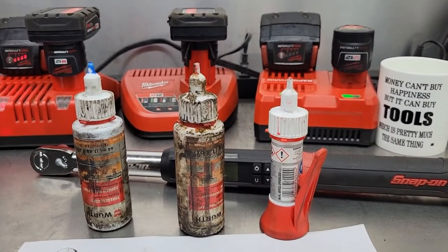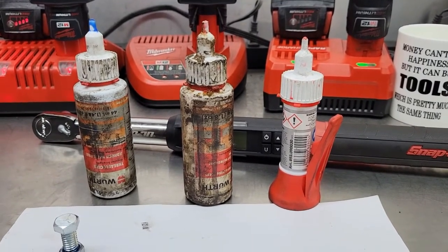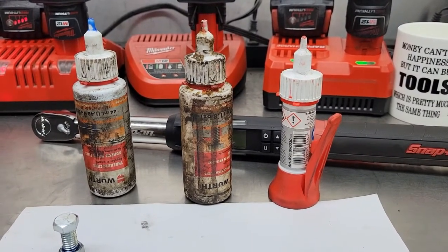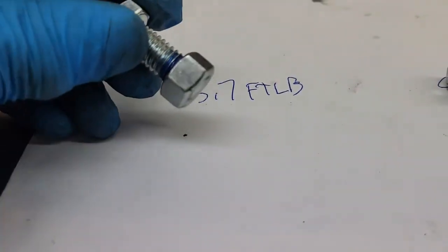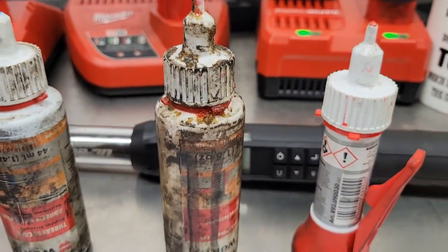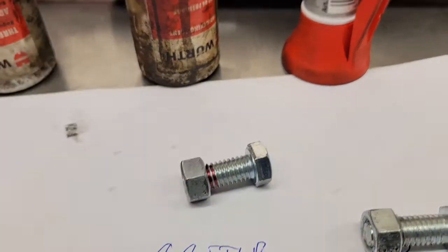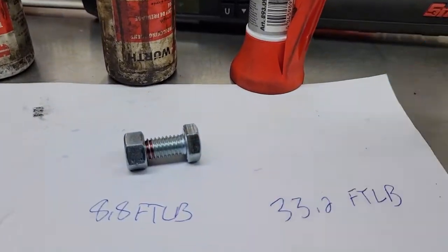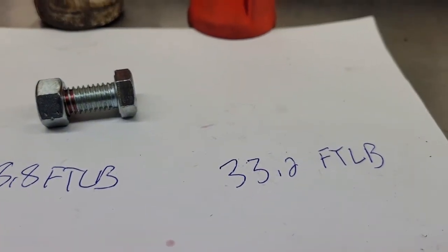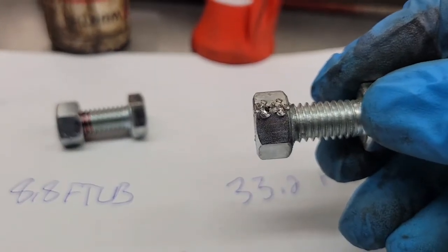Now just to be sure I was on an even playing field, all the thread locker and the super glue are all the same brand. I got these from Worth. Just to recap, the blue thread locker broke free at 5.7 foot pounds. The red thread locker broke free at 8.8 foot pounds. And what really surprised me, super glue broke free at 33.2 foot pounds. In fact, it actually started turning the nut in the vise.